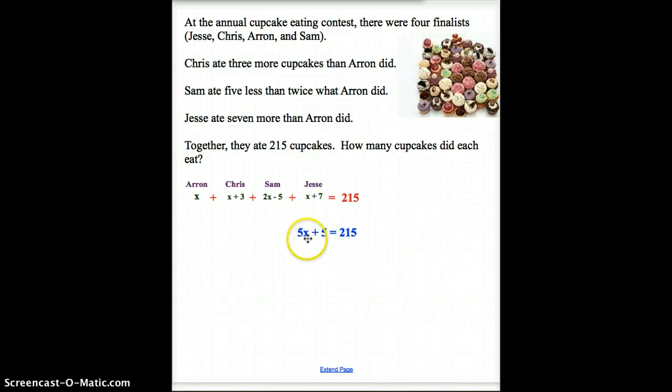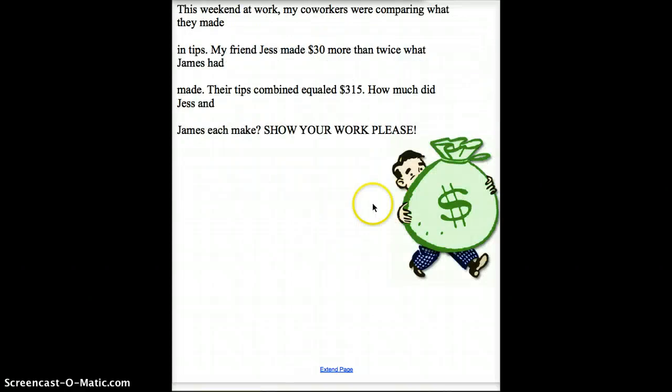Once you get this, though, once you figure out what X equals here - let's say X equaled ten, which is not correct, but if X did equal ten - then you'd come back and say, well, Aaron had ten cupcakes, Chris had thirteen, Sam had, let's see, two times ten is twenty minus five is fifteen, so Sam had fifteen, and Jess had ten plus seven, or seventeen, which obviously is not correct. You're going to come back and tell me what the right answer is. Alright, but before you work on that, you can work on that. If you want to work on that and pause the video, then start it back up. If you want to just write down the rest and then go back and finish that, do that.